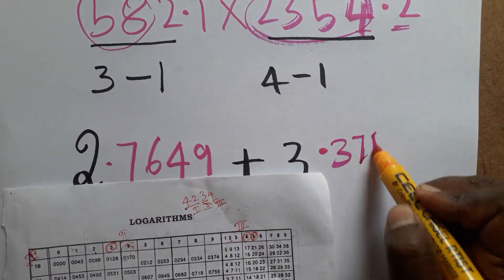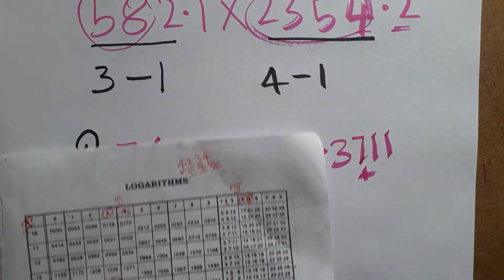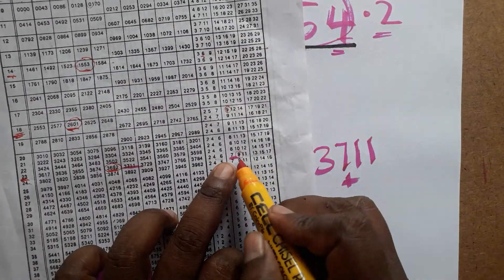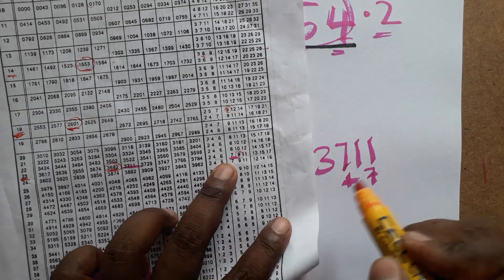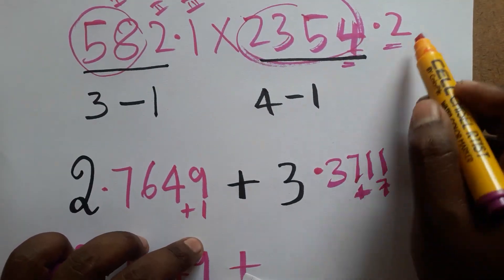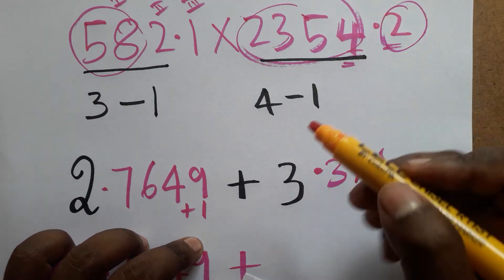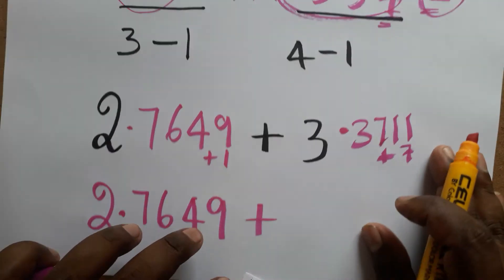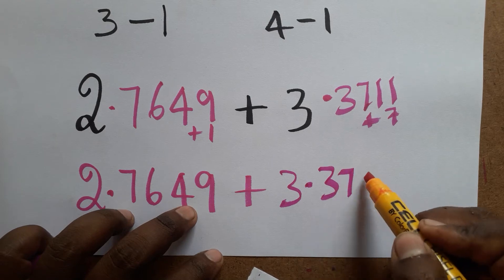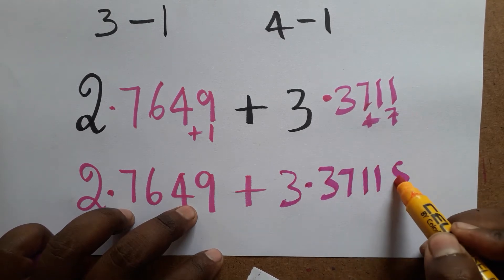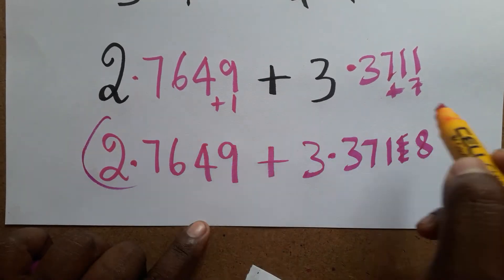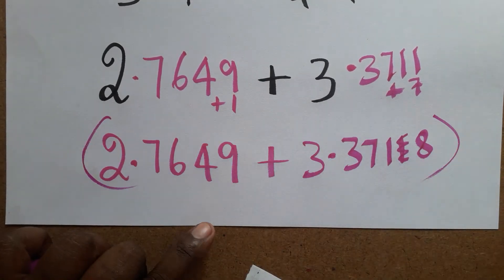For the fourth digit 4, looking in the mean difference column I get 7. So log(3235.4) = 3.3711 plus 7, giving 3.37118. I ignored the last digit as it is very small, so the final log value is 3.37118.